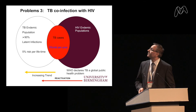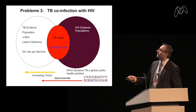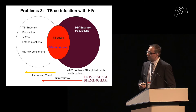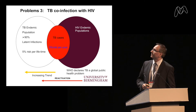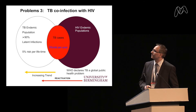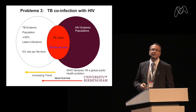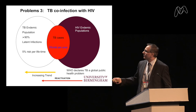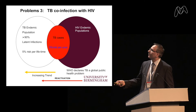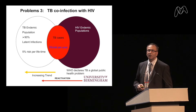The third problem is co-infection with HIV. In the TB endemic population, around 90% have latent infections with about a 5% lifetime risk of developing tuberculosis. But when you introduce HIV into that population, the risk becomes 5% per year due to reactivation. The WHO has declared TB as a global health problem.